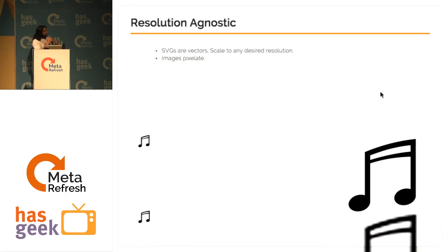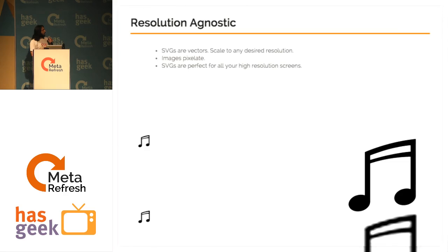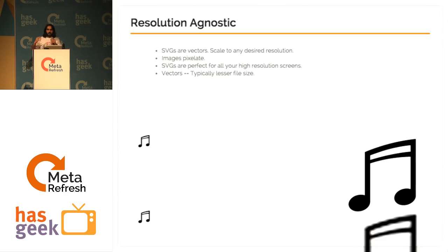Images basically pixelate. Hence, SVGs are basically perfect for all your high-resolution screens. And since they are vectors, they are typically of a lesser file size. So you don't need different file size PNGs for different screens or different sizes — you can just use one file and take care of all your resolutions.